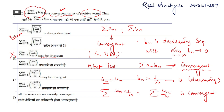So option B is incorrect — uₙ/n cannot be divergent; it is always convergent. We have proved this. Now let's check option C: uₙ^(1/n) / n may be divergent. This could be divergent — that we need to check. B is false, so this is true potentially.